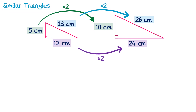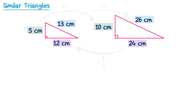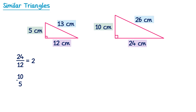It works in the other direction as well: going from 24 to 12 we multiply by one half, and the same applies for the other sides. We can find the scale factor of enlargement by dividing pairs of corresponding sides. So if we take the purple sides, 24 and 12, and divide them, we get 2. This works for the other pairs too: 10 divided by 5 is also 2, and 26 divided by 13 is once again 2.